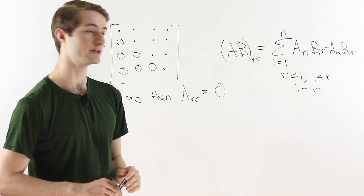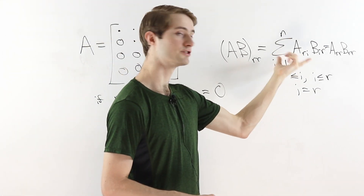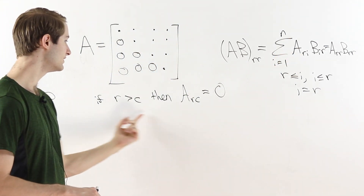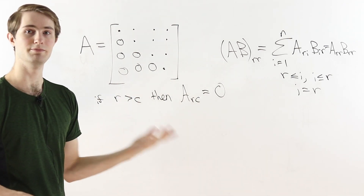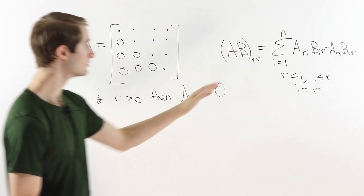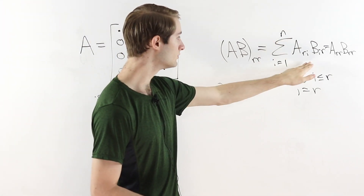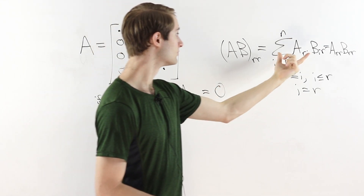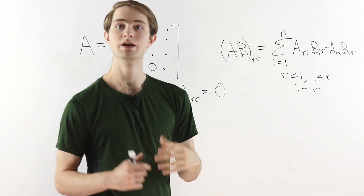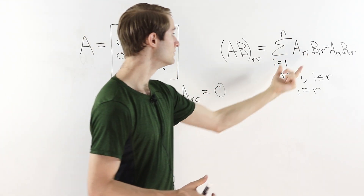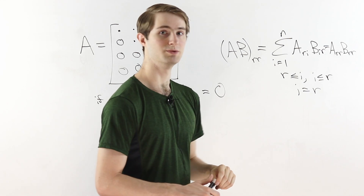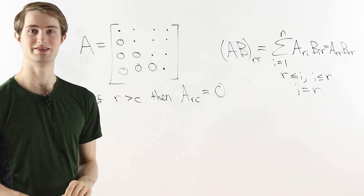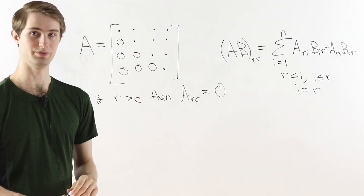So we have proved that the product of two upper triangular matrices is also upper triangular, and that the diagonal entries of that product are the products of the corresponding diagonal entries of each factor matrix. This followed directly from the explicit matrix multiplication formula together with the definition of upper triangular, by examining what it takes for each term in the sum to be non-zero.